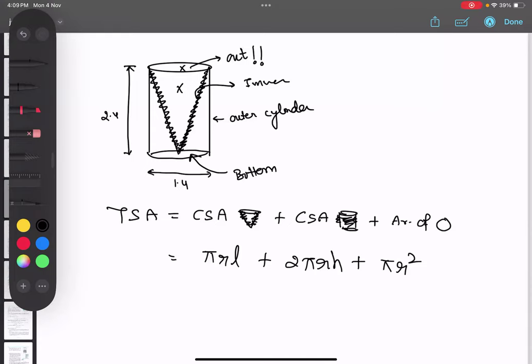So anything common? I guess πr is common? Yes. You don't have to do this step, but these steps help me in reducing my calculation. πr(l + 2h + r). Isn't it? Yes.